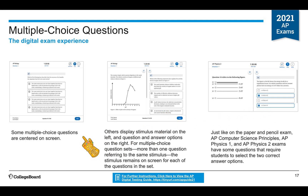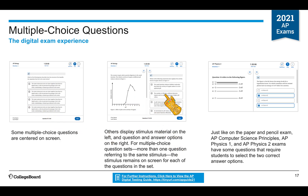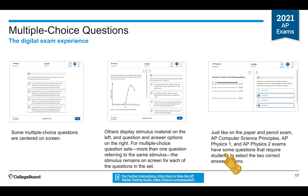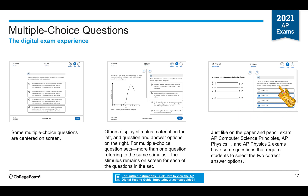There are several types of multiple choice questions in the digital exam. Some are centered on the screen; others have material on the left and the question and answers on the right. AP Computer Science Principles, AP Physics 1, and AP Physics 2 exams have some questions that require students to select the two correct answer options, so make sure you are reading all the directions and selecting as many answers as you are asked to.